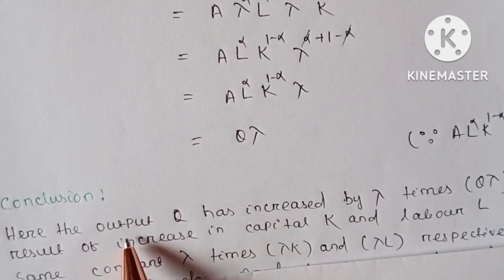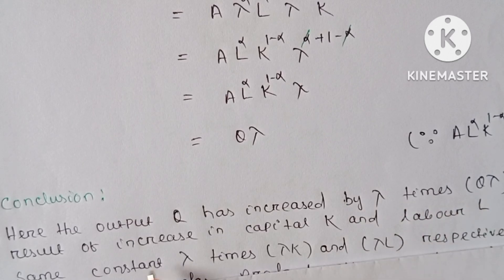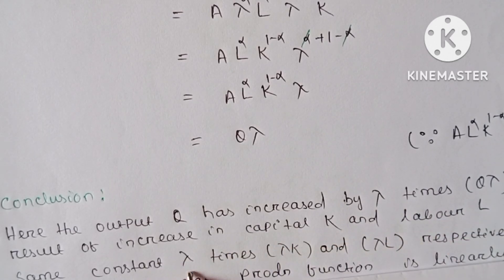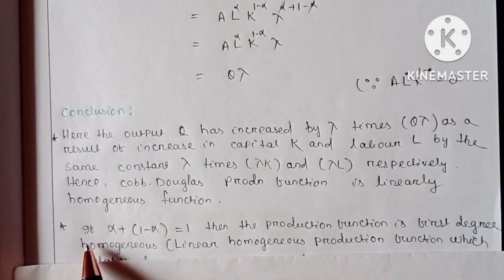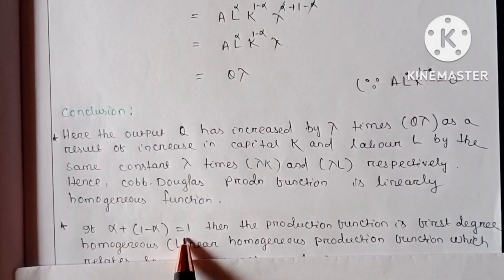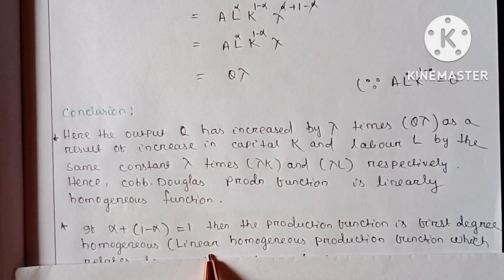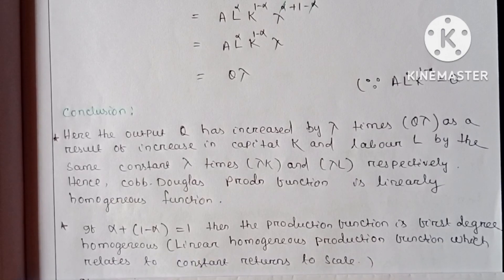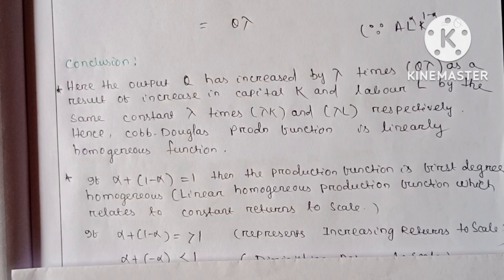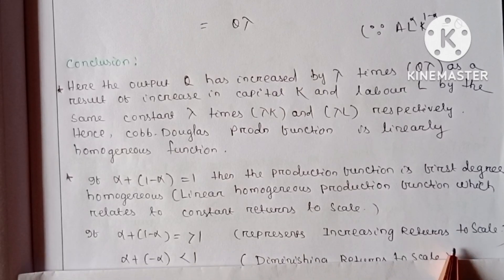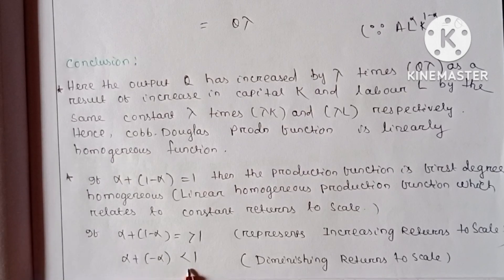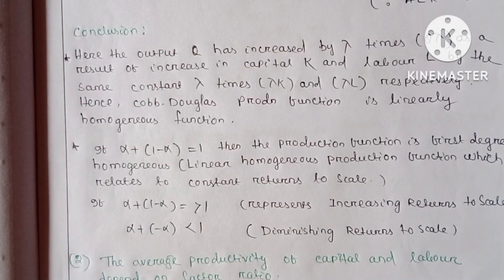The output Q has increased by lambda times as a result of an increase in capital and labor by the same constant lambda respectively. Hence, the Cobb-Douglas production function is linearly homogeneous. If alpha plus 1 minus alpha equals 1, the production function is first-degree homogeneous, i.e., linear homogeneous, which relates to constant returns to scale. If alpha plus 1 minus alpha is greater than 1, it represents increasing returns to scale.